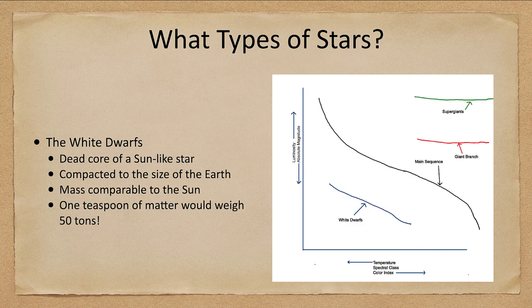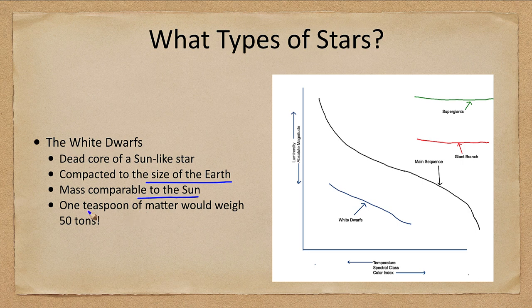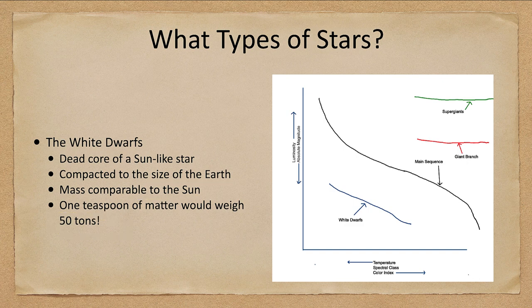So the white dwarfs are stars that have been compacted down to the size of Earth, but still have a mass comparable to the sun. A teaspoon, just a teaspoon of this material would be 50 tons. That is how compacted down this material is.